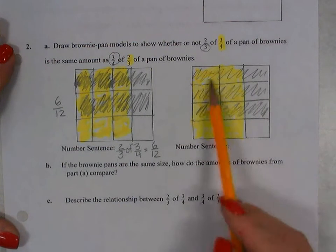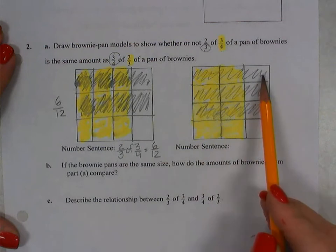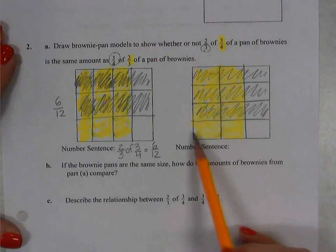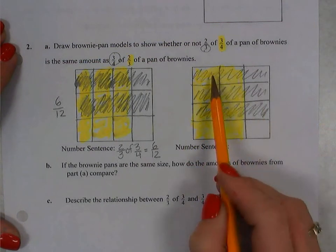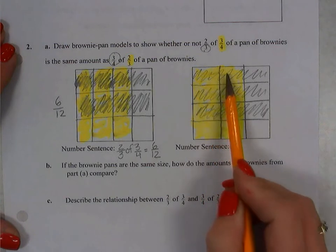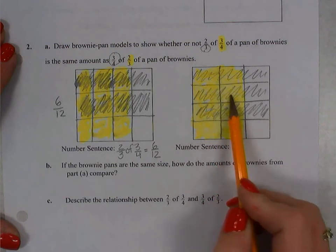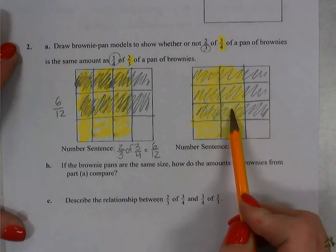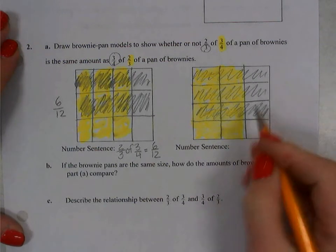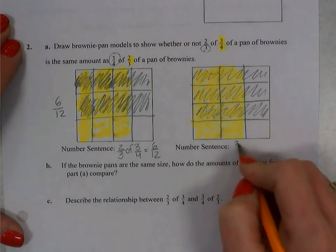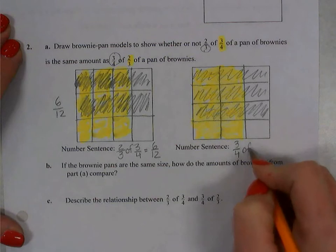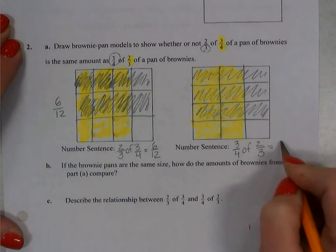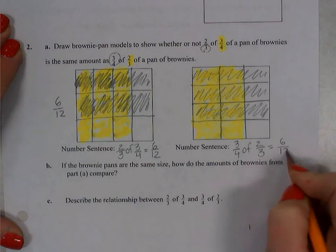So now you can see that I have a total of 12 pieces that represent the whole pan, but I'm going to be purchasing one, two, three, four, five, six of those pieces. My number sentence here is three-fourths of two-thirds equals six-twelfths.